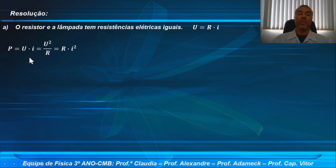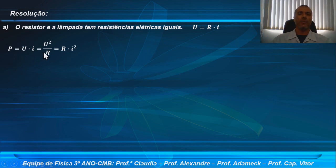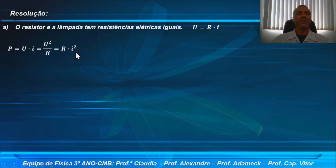Resistores ômicos obedecem a relação U igual a R vezes I, sendo a resistência definida como a razão entre U e a intensidade corrente. Quando R é constante, essa relação é muitas vezes chamada de primeira lei de Ohm. Nós temos a relação da potência: potência igual a U vezes I, que é a taxa com que a energia é transportada pela corrente elétrica para os dispositivos do circuito elétrico.